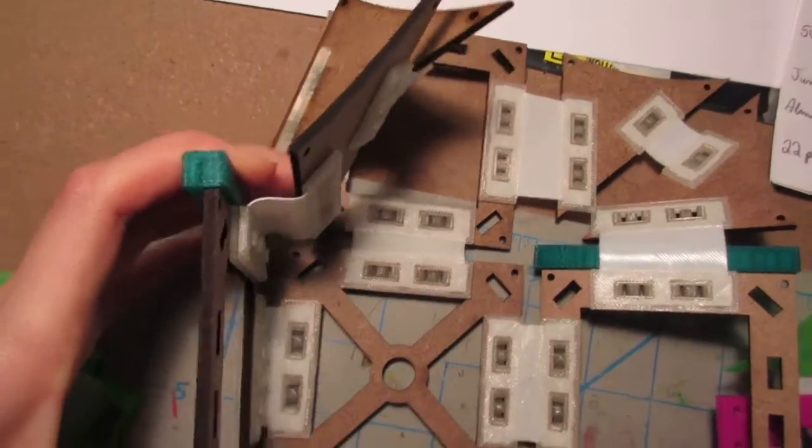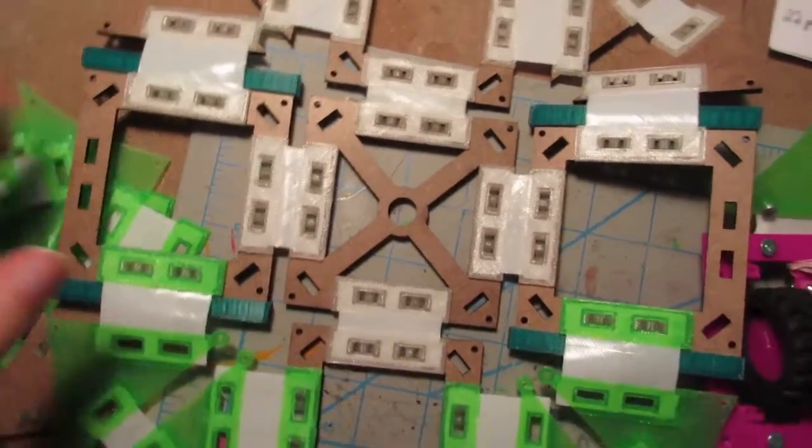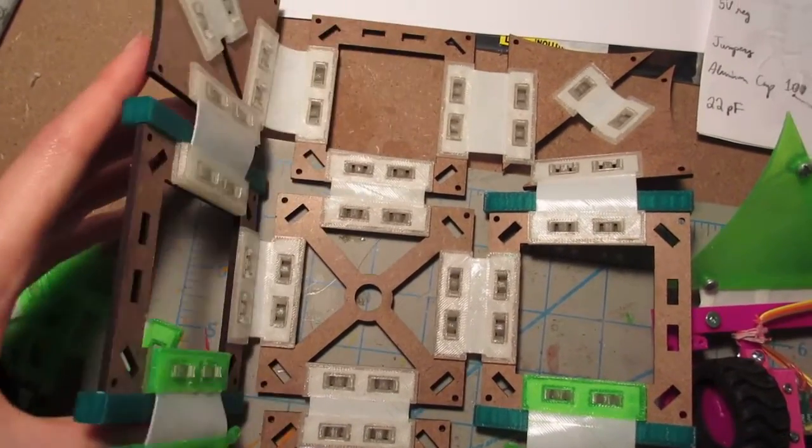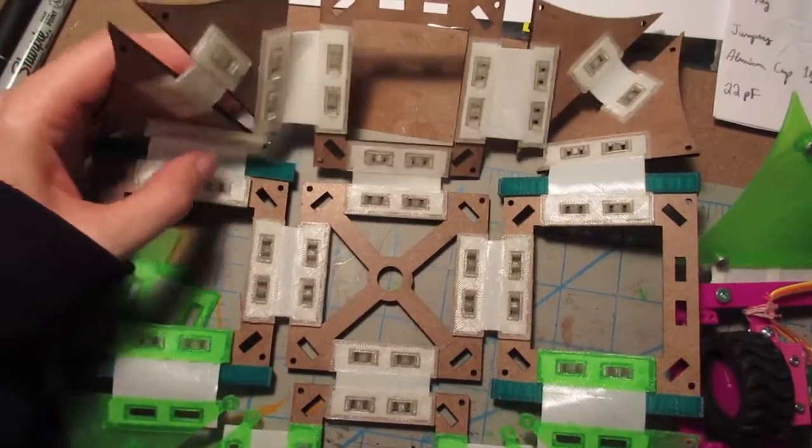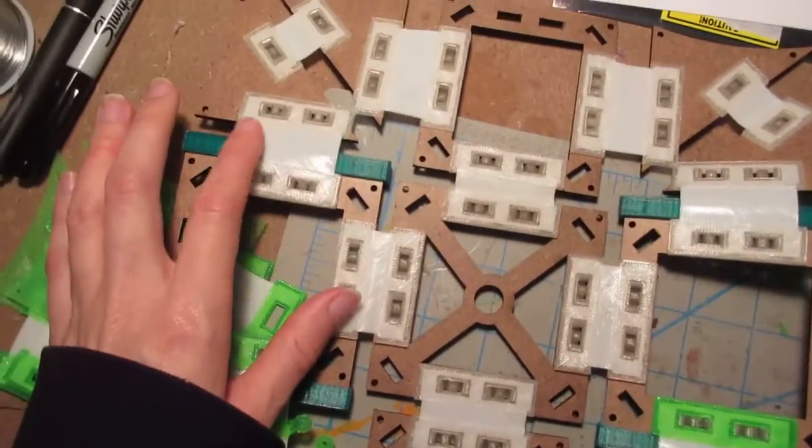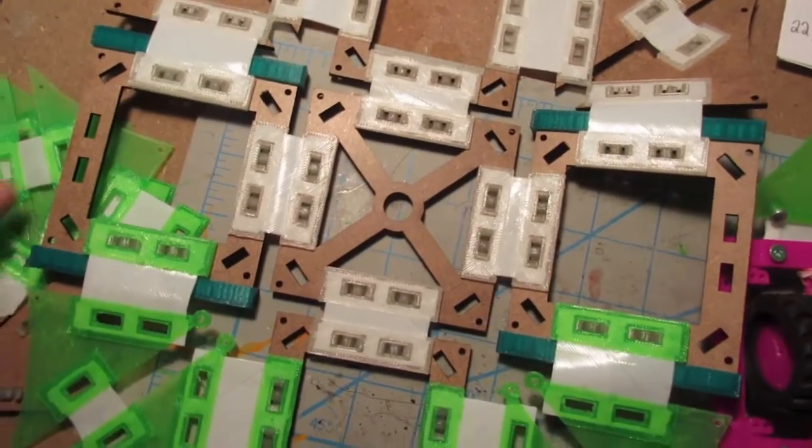So after it's all assembled, then I can go back and check to make sure the dimensionality is correct. It's hard to estimate it in CAD when you have flexible pieces because there's no real way to do that.